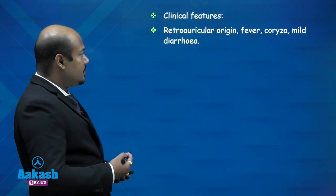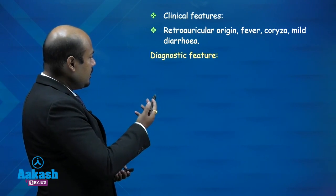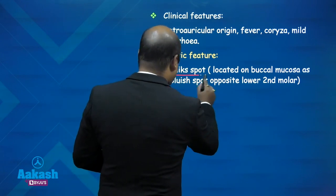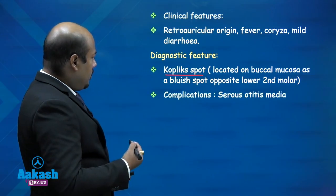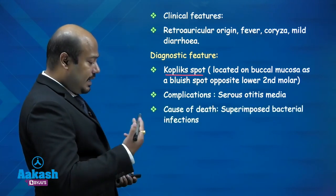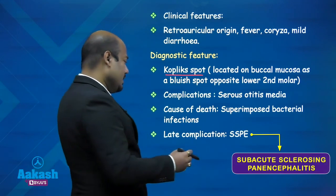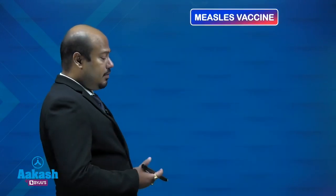Clinical features of measles include fever, coryza, and mild diarrhea. The diagnostic feature is Koplik's spot — a bluish spot in the buccal mucosa around the lower second molar. Complications include otitis media. The cause of death can be superimposed bacterial secondary infections. The late complication is subacute sclerosing panencephalitis (SSPE).